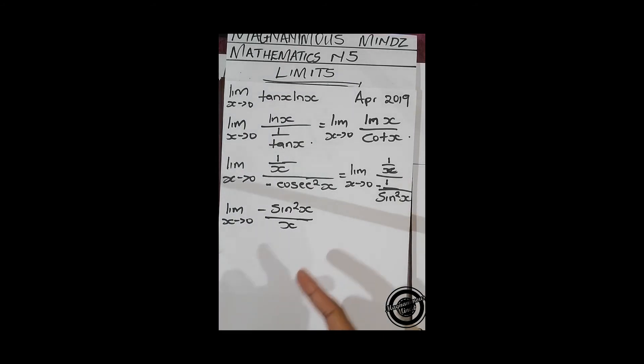If we directly substitute, this is going to give us zero over zero, which is another indeterminate form of limits. And we know that if we get that, we have to use L'Hôpital's, so we use L'Hôpital's again.